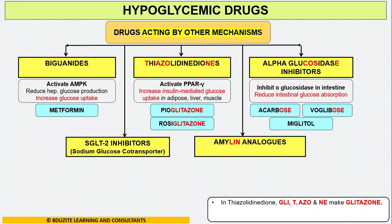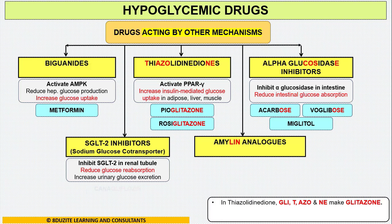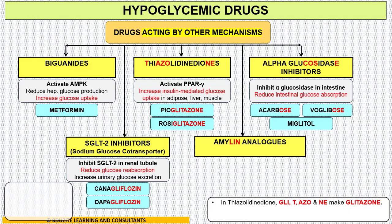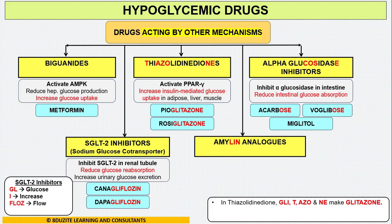Moving on to SGLT2 inhibitors. These drugs inhibit the SGLT2 transporter in the renal tubule, reducing glucose reabsorption and increasing urinary glucose excretion. We have two drugs: canagliflozin and dapagliflozin. The red letter suffix G-L-I-F-L-O-Z-I-N: GL stands for glucose, I for increase, FLOZ for flow, and IN for urine. So gliflozins increase glucose flow in urine.